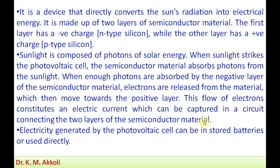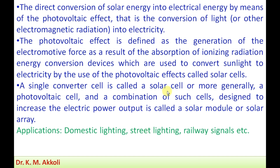Thereby the flow of electricity takes place. The electricity generated by the photovoltaic cell can be stored in batteries or used directly. Whatever releasing of electrons takes place — how it occurs and what the effect of that is — is explained here. The direct conversion of solar energy into electrical energy takes place by means of the photovoltaic effect.